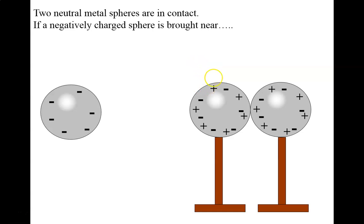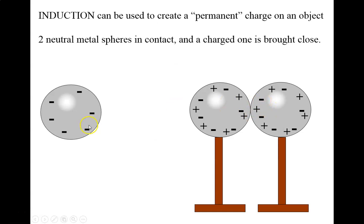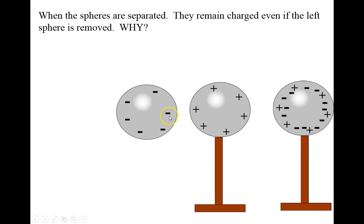This is called charging by induction and separation. We've got two metal spheres, and we bring a negatively charged object near — not touching. What happens is we repel the electrons to one side, so we end up with a positively charged sphere and a negatively charged sphere. Together they're neutral overall, but because they're different objects, one is positive and one is negative. If I bring the charged object back without touching, they go back to normal. But if I separate them before taking the charged object away, those charges can't get back, and I end up with a positively charged sphere and a negatively charged sphere.